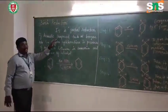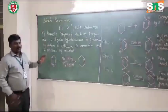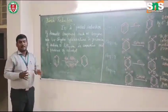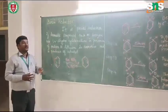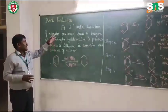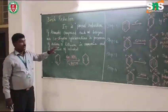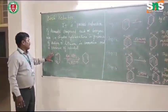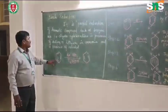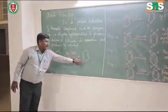It is the partial reduction of aromatic compounds. If you see, reduction means it will be completely reduced and converted to hydrocarbons. But here, there is the partial reduction of aromatic compounds such as benzene, which will be converted into 1,4-dihydrocyclohexadiene.